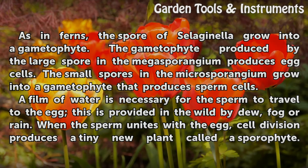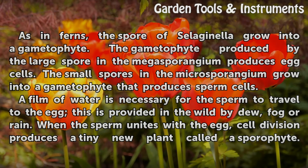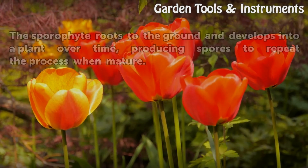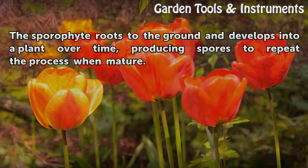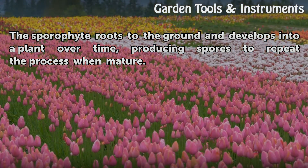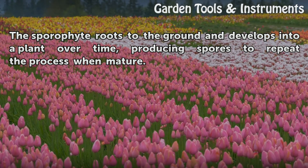When the sperm unites with the egg, cell division produces a tiny new plant called a sporophyte. The sporophyte roots to the ground and develops into a plant over time, producing spores to repeat the process when mature.